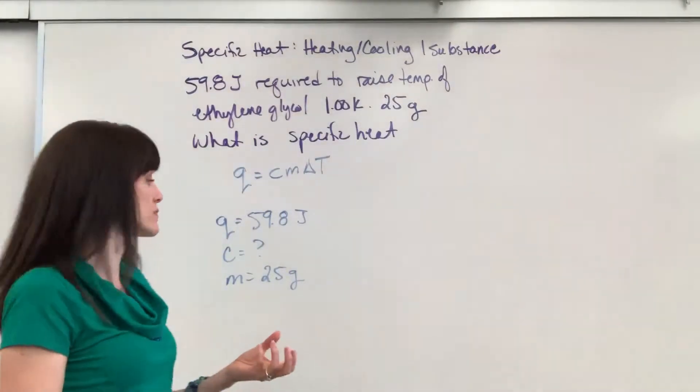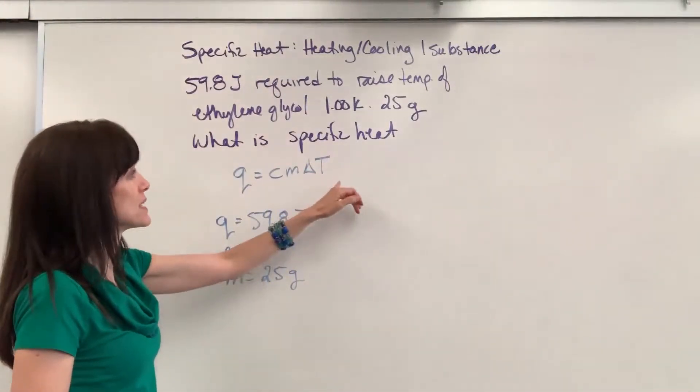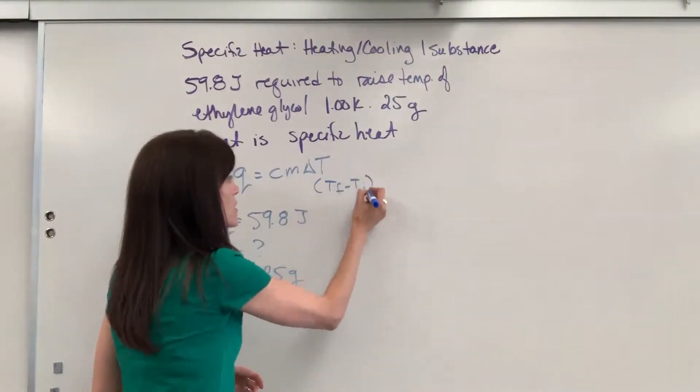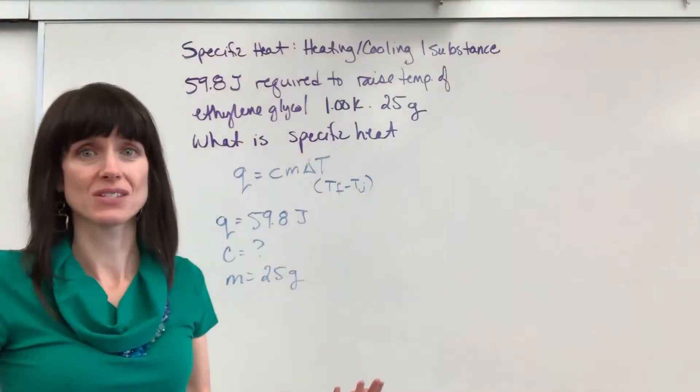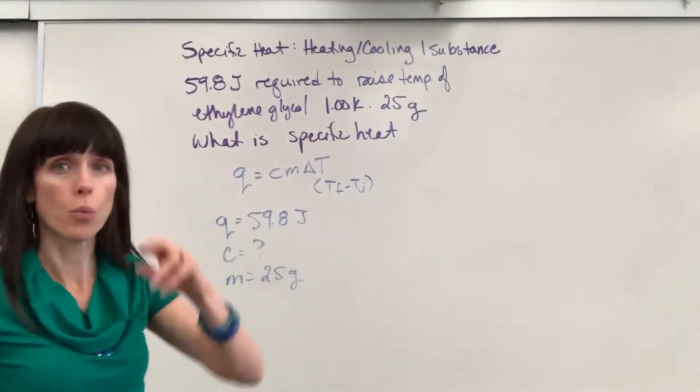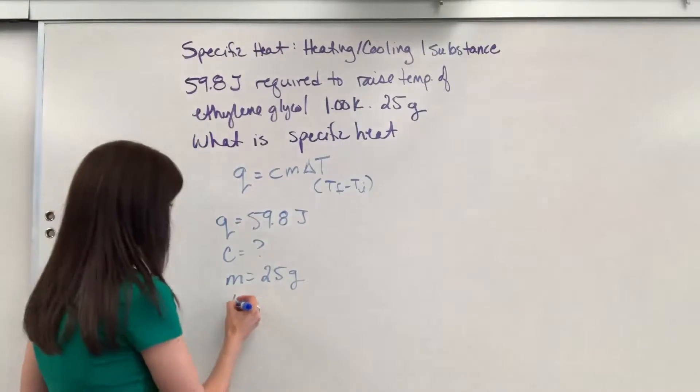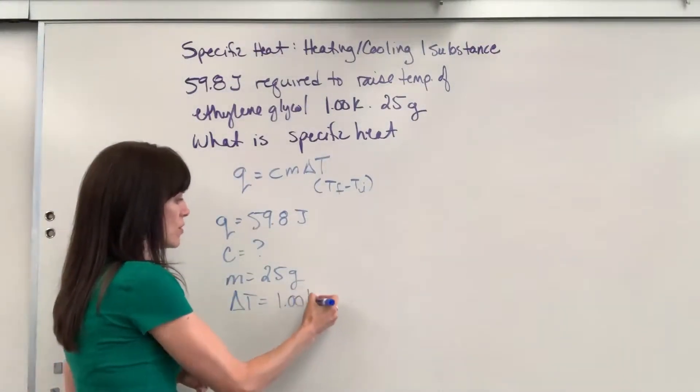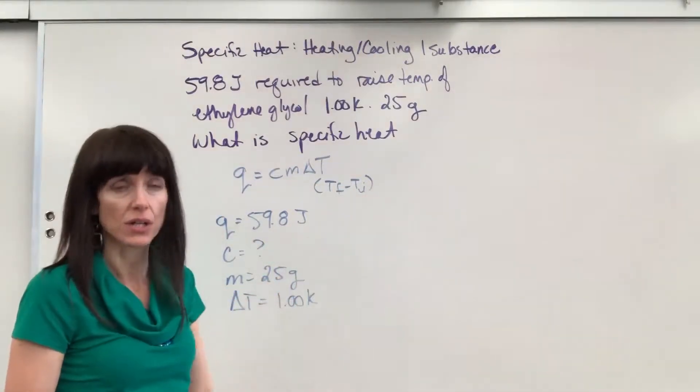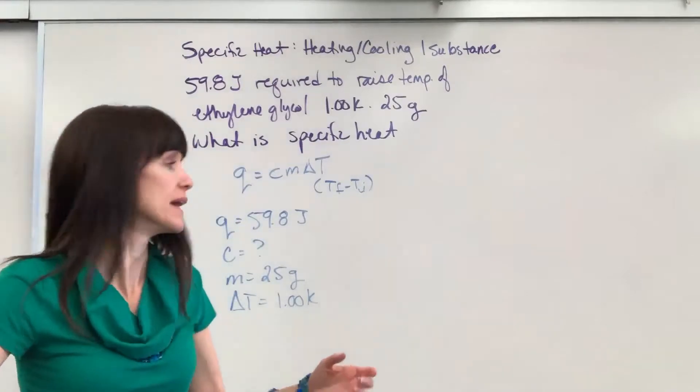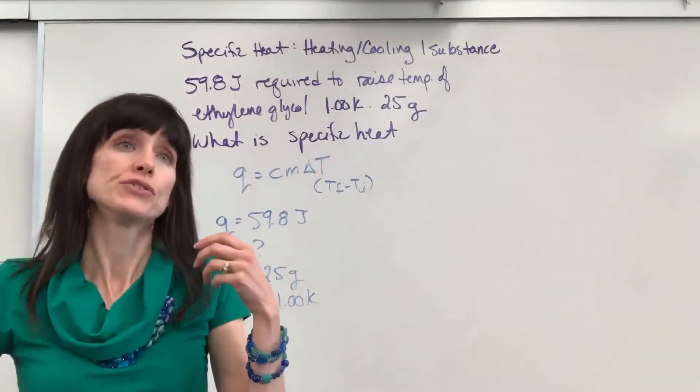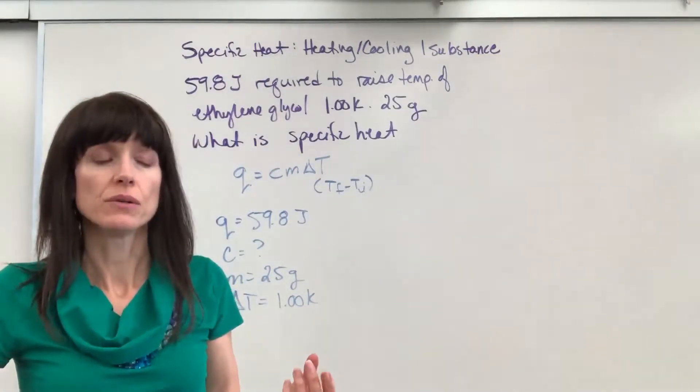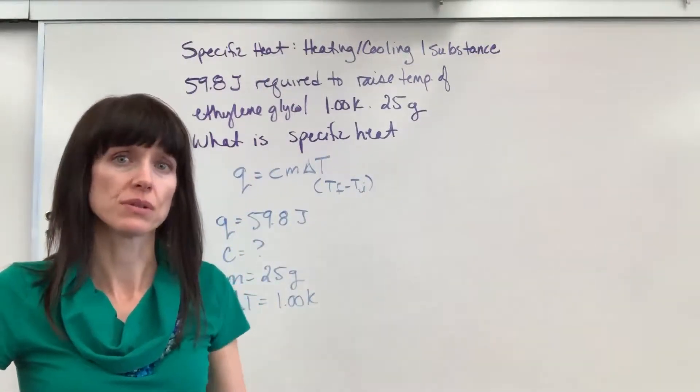And then change of temperature. So change of temperature, we're going to have, remember, final minus initial. So let me put this as a reminder: T final minus T initial. Well, they already gave us the change. They said that it changes one kelvin. So they actually gave us straight up delta T. We didn't even have to do the final minus the initial. If they had said that it increases from 298K to 299K, you would just do the 299 minus the 298.